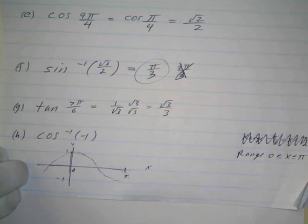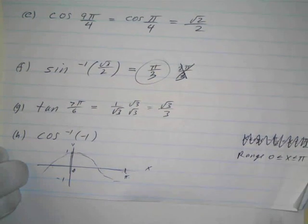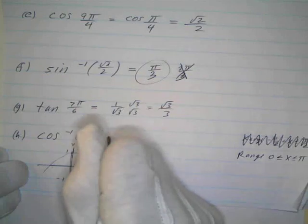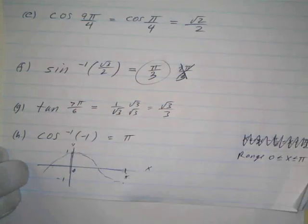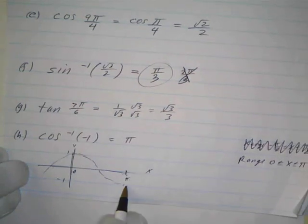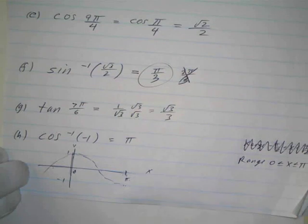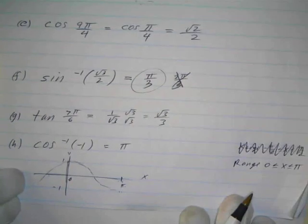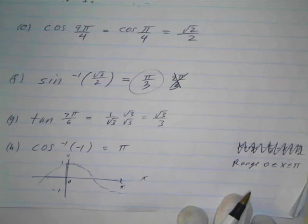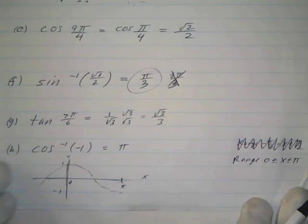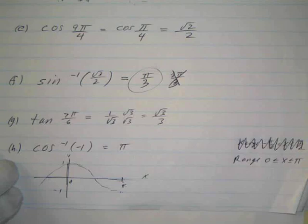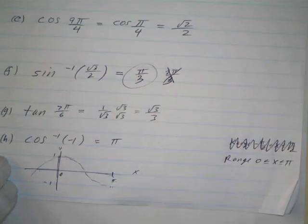When is the cosine equal to negative 1? It's equal to negative 1 at π. So the inverse cosine of negative 1 is just π. You can look at the graph and see the value negative 1 falls within the range [0, π]. That's a little tricky — inverse functions require understanding how we restrict the domains of the corresponding trig functions to get the range of the inverse functions.